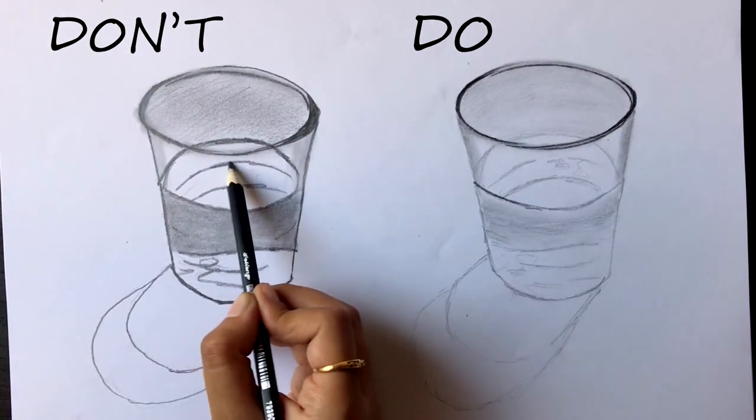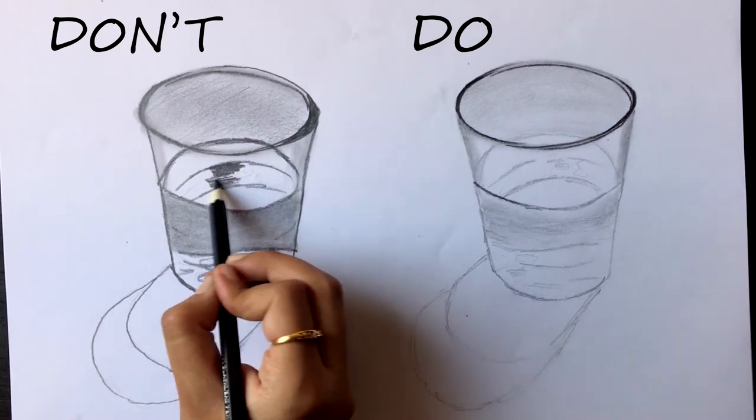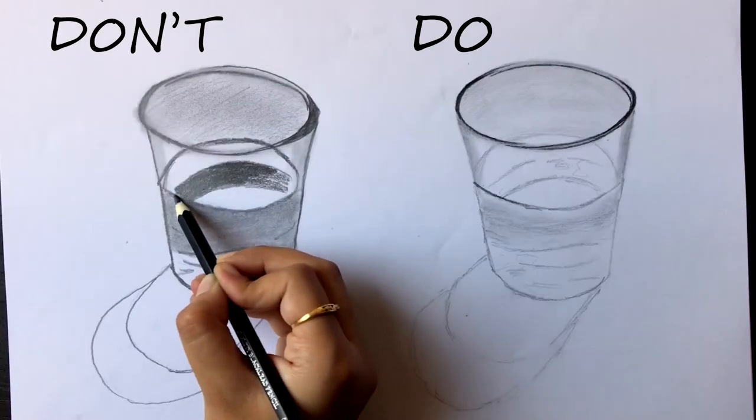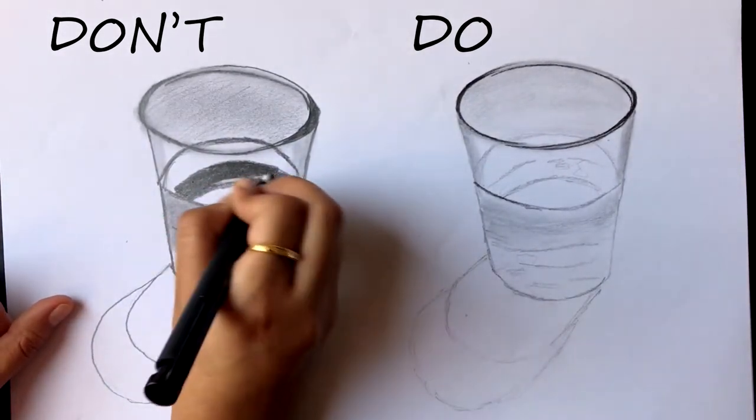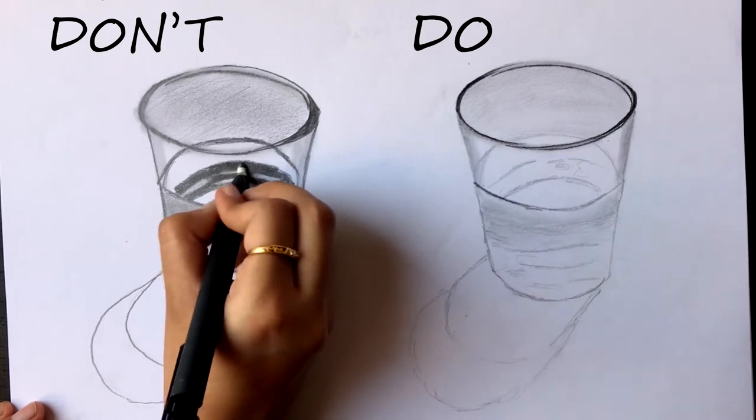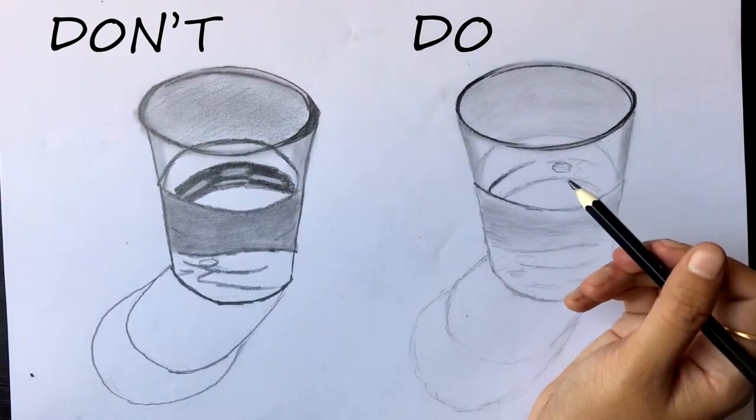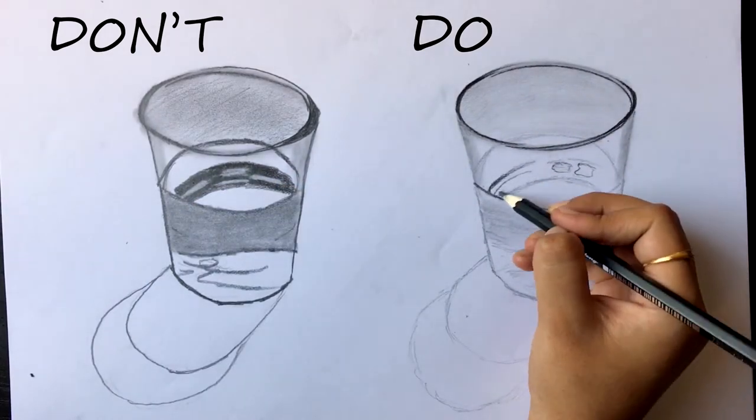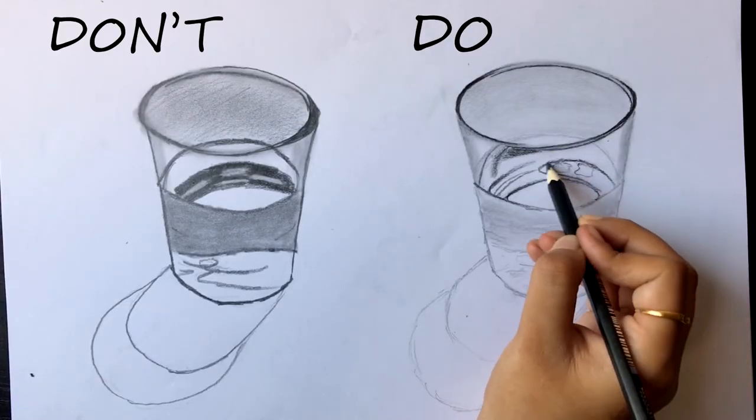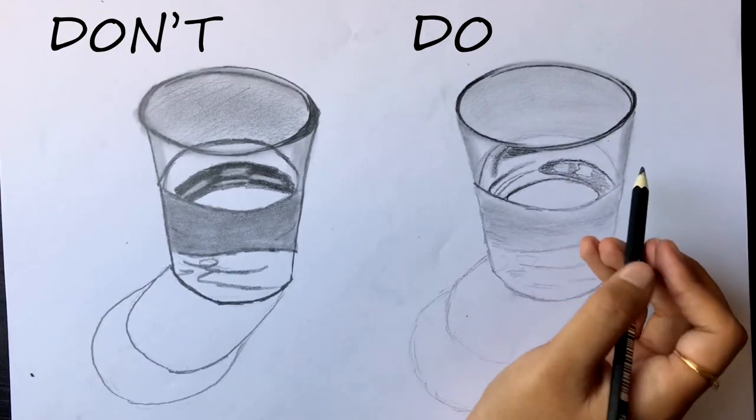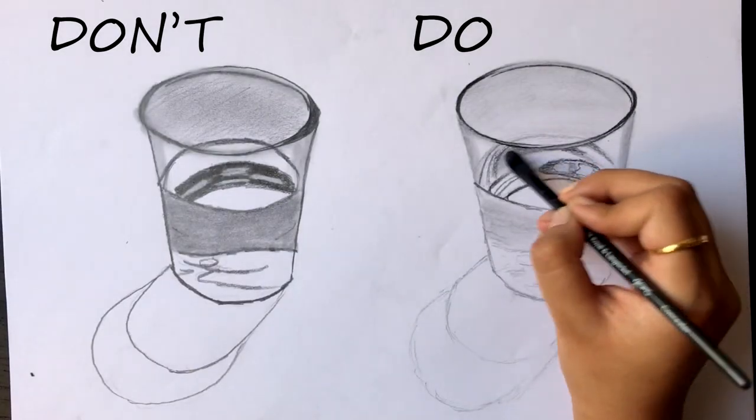For the highlight, I suggest you do not add the highlight using an eraser after shading in a section. This does not give a realistic effect because it is very difficult to remove all the graphite. Instead, you should mark out the highlights beforehand and work around them as you shade and blend. This would help make the highlights stand out and show a nice contrast between the light and dark areas.